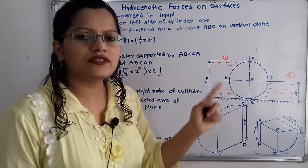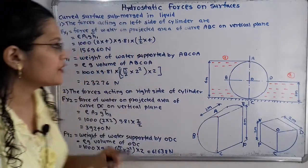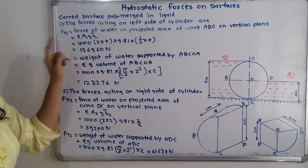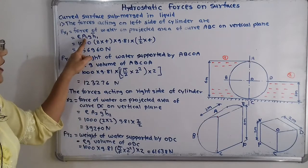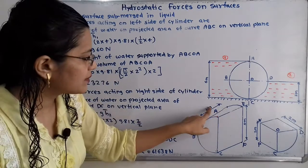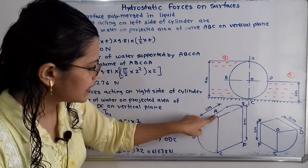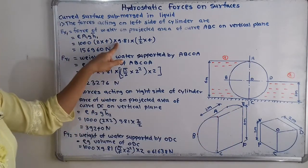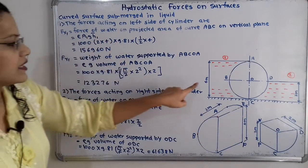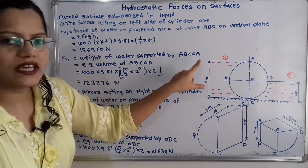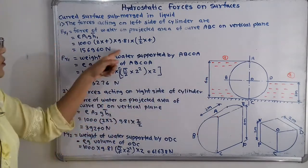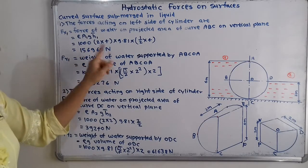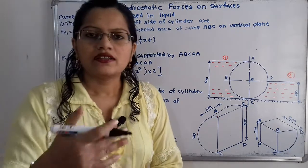Substituting the values: rho = 1000, area A1 = 2 × 4 = 8 m², G = 9.81, and H1-bar = (1/2) × 4 = 2. So FX1 = 1000 × 8 × 9.81 × 2 = 156,960 Newton.